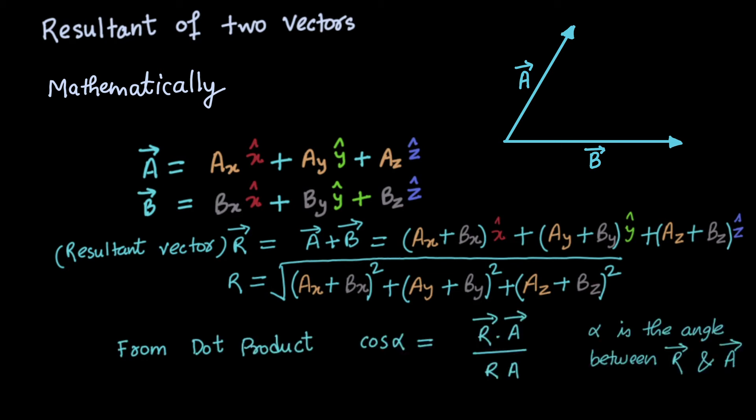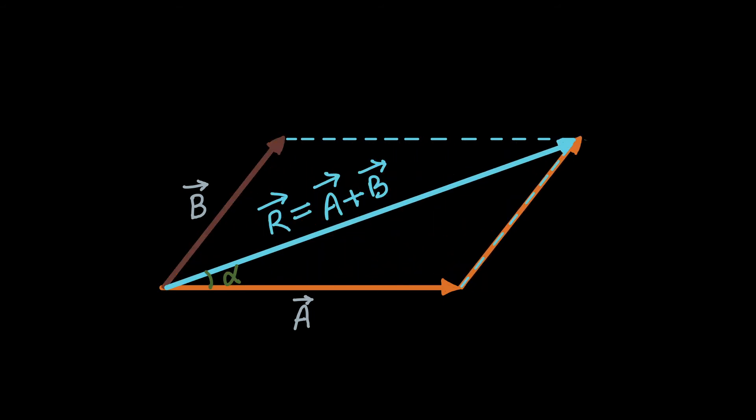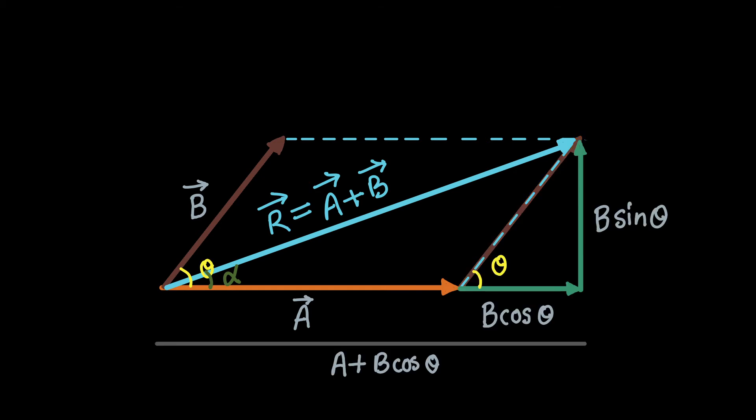There is another way of finding the magnitude of the resultant vector. Add the vectors like this, and slide the vector b over here. The angle between a and b is theta. Then this length will be a plus b cos theta, and this length will be b sin theta.